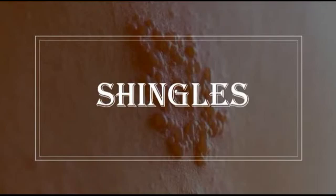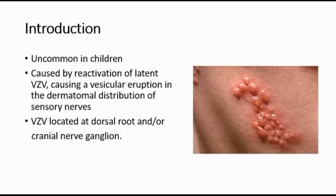In this video, I'm going to talk about shingles. Shingles is a viral infection that causes a painful rash, and although shingles can occur anywhere on your body, it most often appears as a single stripe of blisters that wraps around either the left or the right side of your torso. It is uncommon in children, and it is caused by the varicella zoster virus, which is the same virus that causes chickenpox.